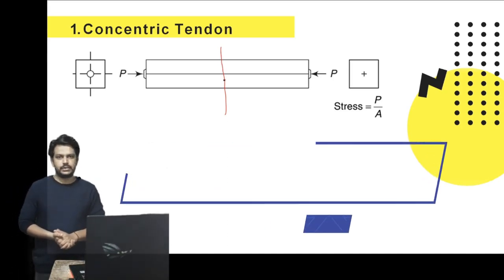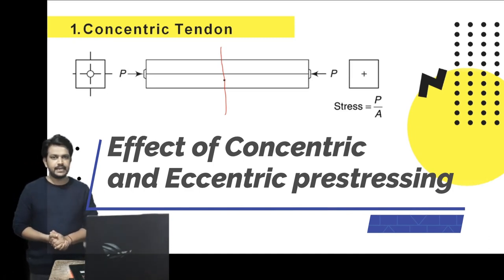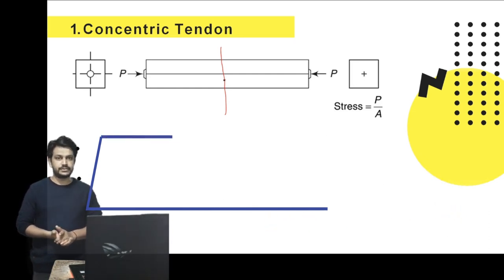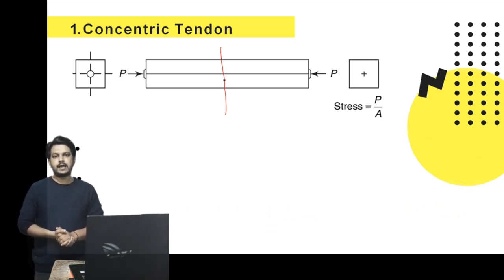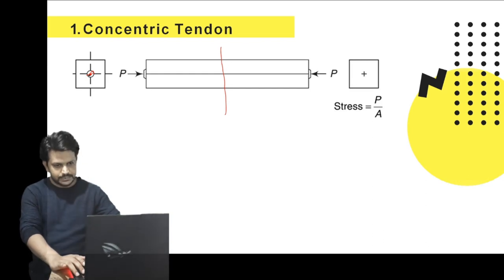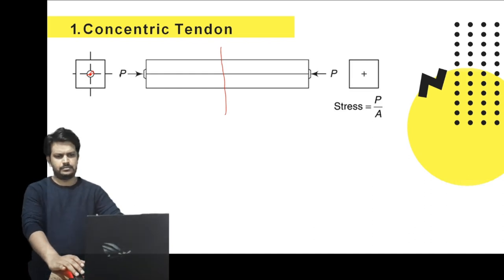As seen in the video, there are two types of prestressing. A tendon can be placed concentrically or eccentrically. First, we will deal with concentric tendons. The tendons are said to be concentric when the CG of the tendon coincides with the CG of the cross section, as shown in the example here. Such type of prestressing is called concentric prestressing.